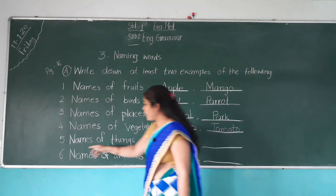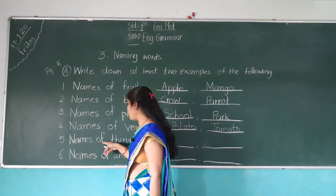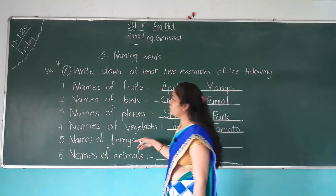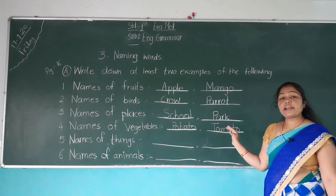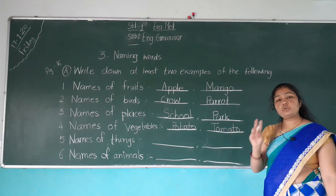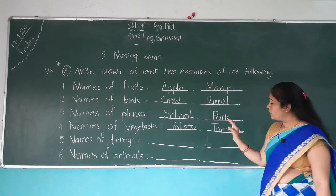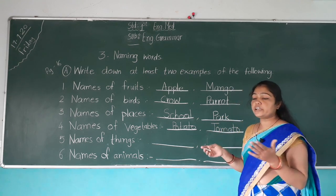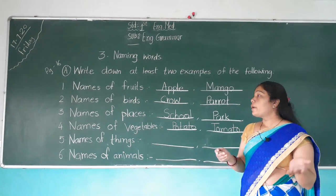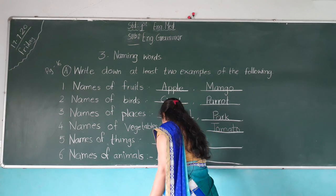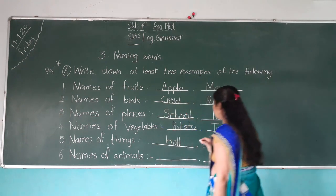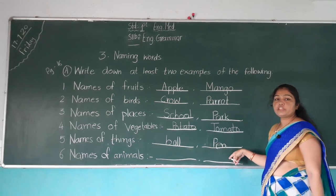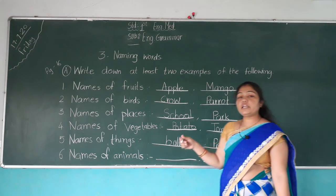Number five: Names of things. Any things we can write here, but we write only two names, because they want at least two examples. We will write here only two names of things — we can write pen, table, chalk, duster, book, everything. We write ball — B-A-L-L — and pen — P-E-N. Do you write with a pen? Pen is a naming word.